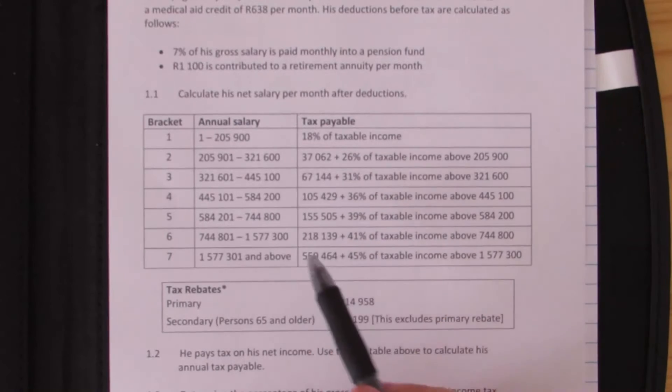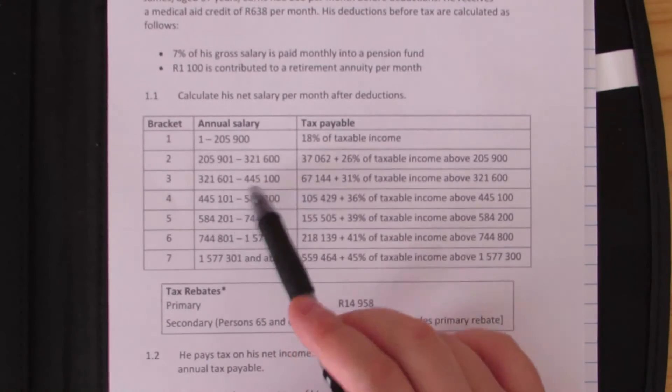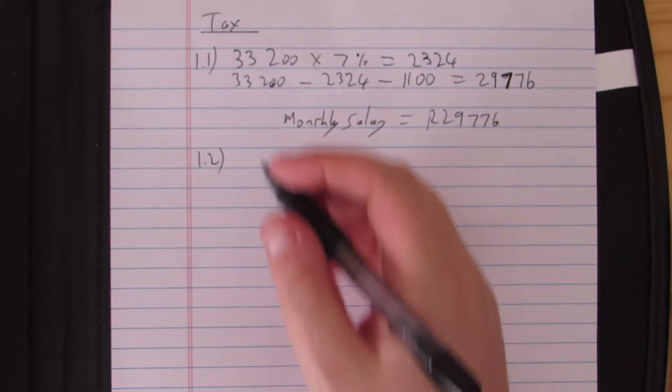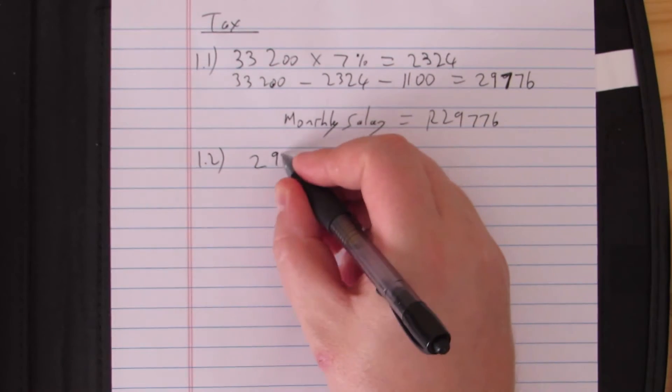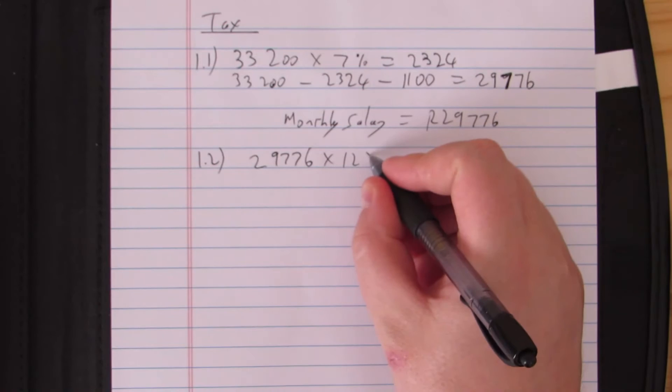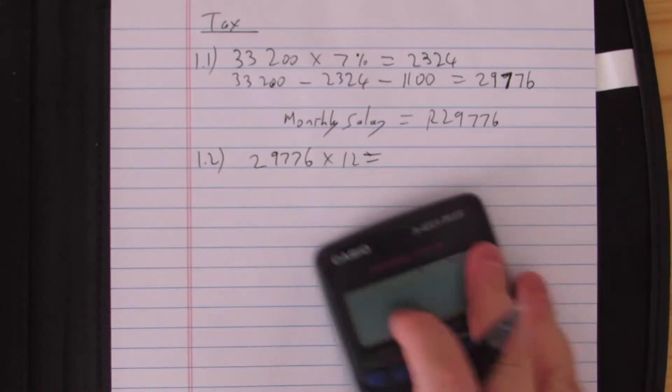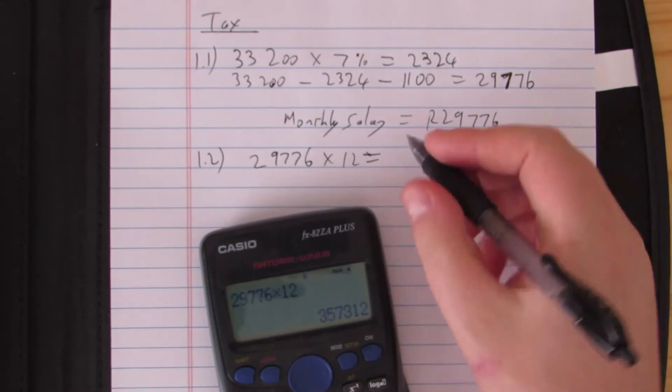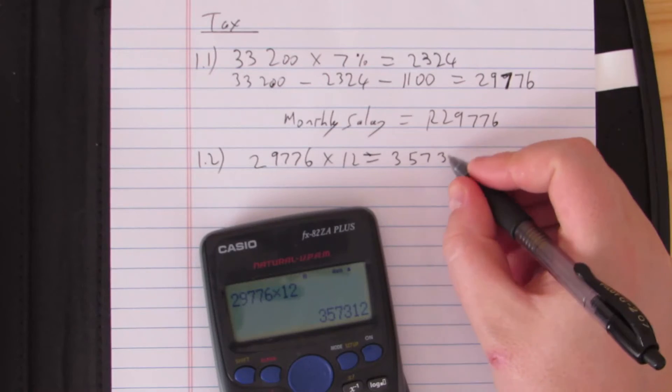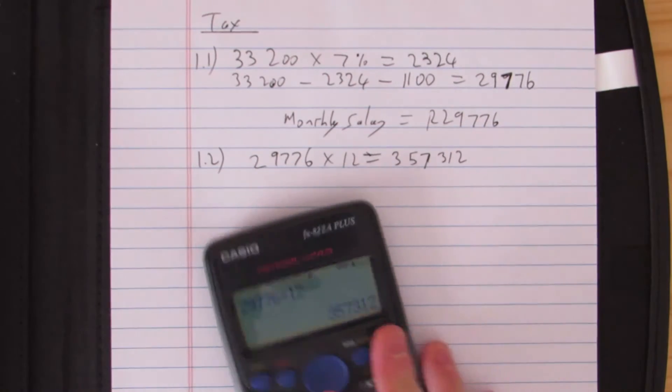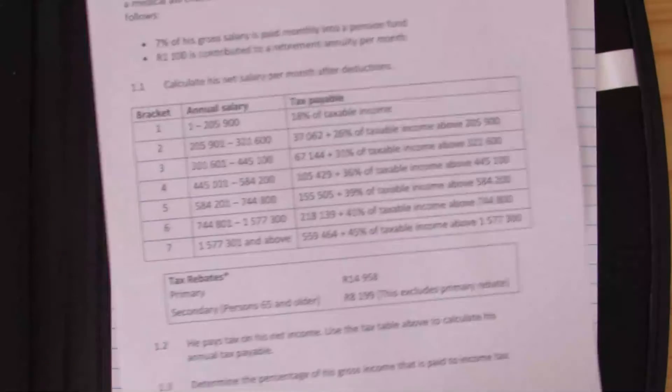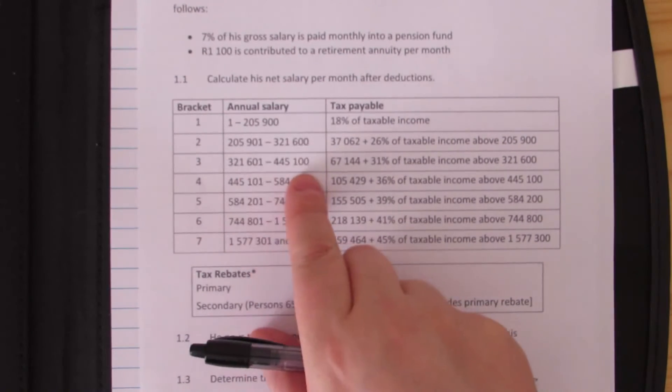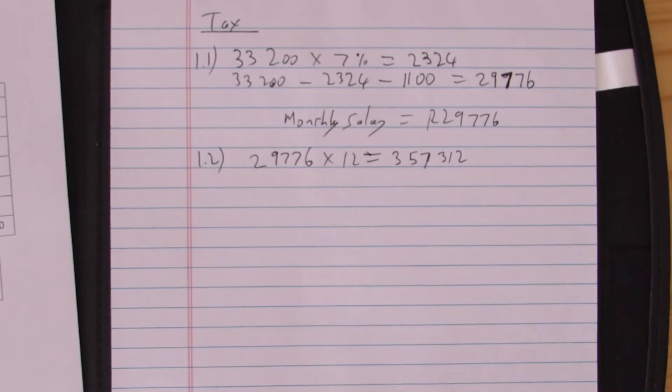We're looking at these annual salaries. I need to find out how much he earns in a year. So the first thing we need to do is take the total that he earns and find out what it would be in a year. 29,776 times 12 gives us 357,312. So 357,000 rand sits in bracket three here because it is between those two amounts.